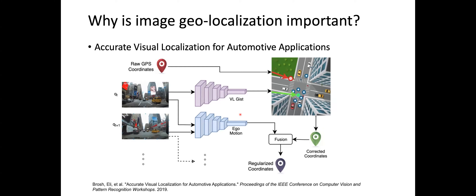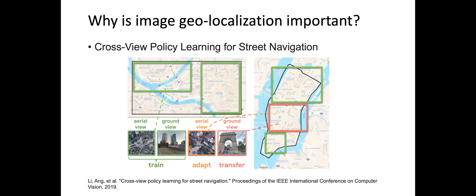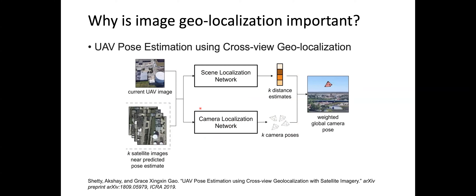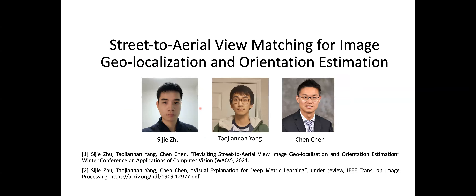Geolocalization has many important applications. We can use image geolocalization to correct noisy GPS coordinates and assist mobile navigation. Here's another example using cross-view for street navigation, and we can also use cross-view geolocalization for UAV pose estimation. I'm going to talk about the work 'Street to Every View Matching for Image Geolocalization and Orientation Estimation,' joint work with my PhD student Siji Anato, published at ICCV 2021.